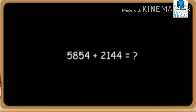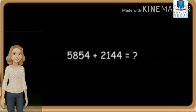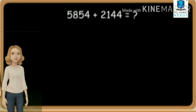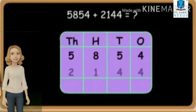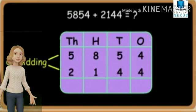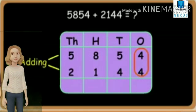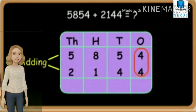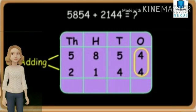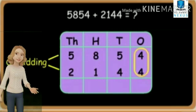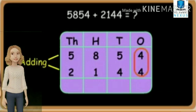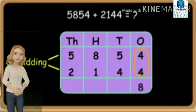We are going to add 5854 with 2144. First we need to place the numbers in the place value chart and we are going to begin with counting the number of digits in the ones place - we have 4 and 4. So we need to add 4 plus 4 gives you 8.